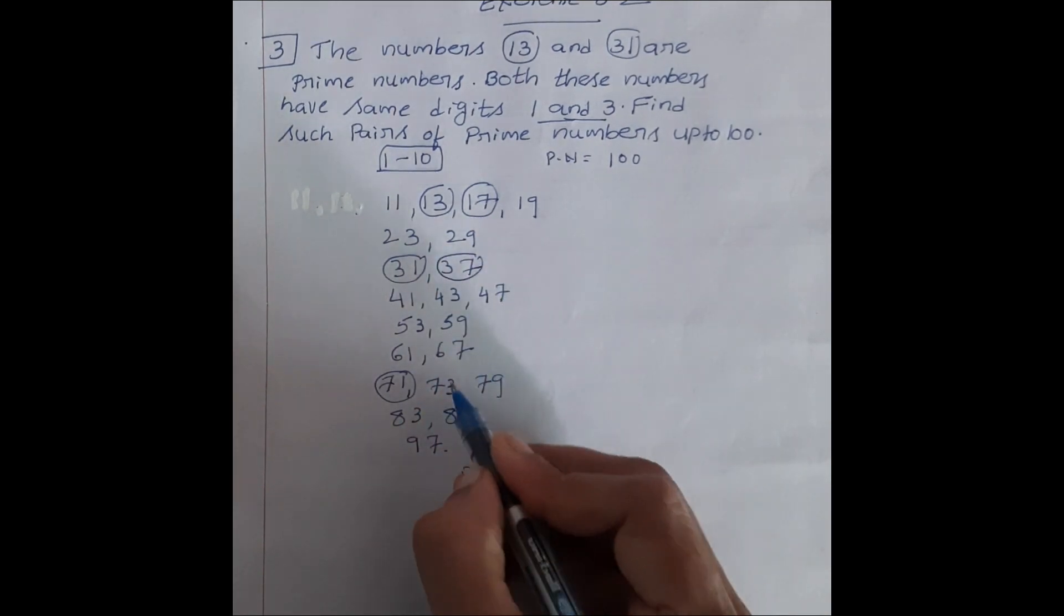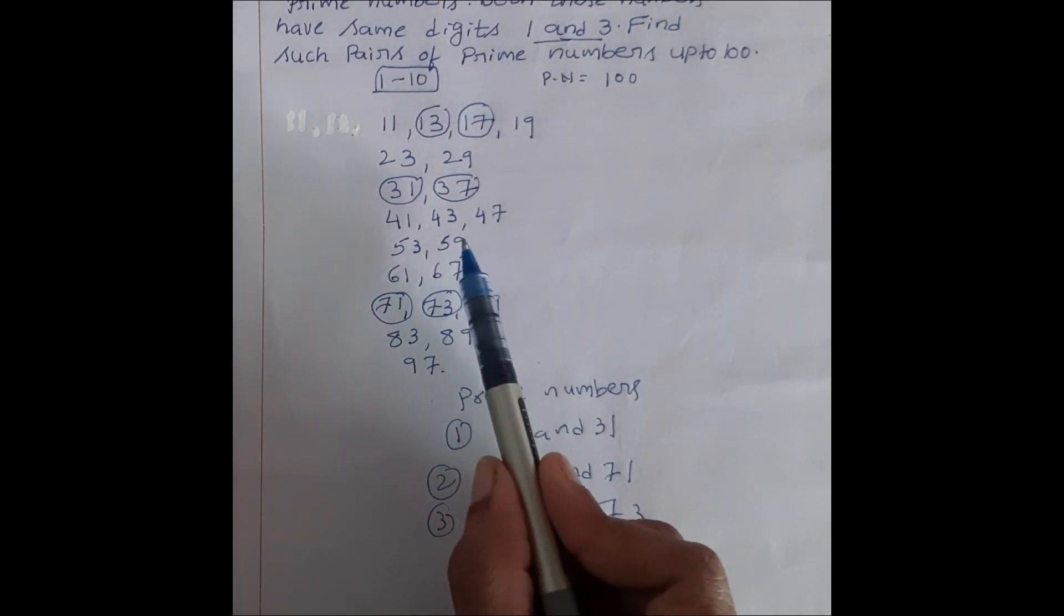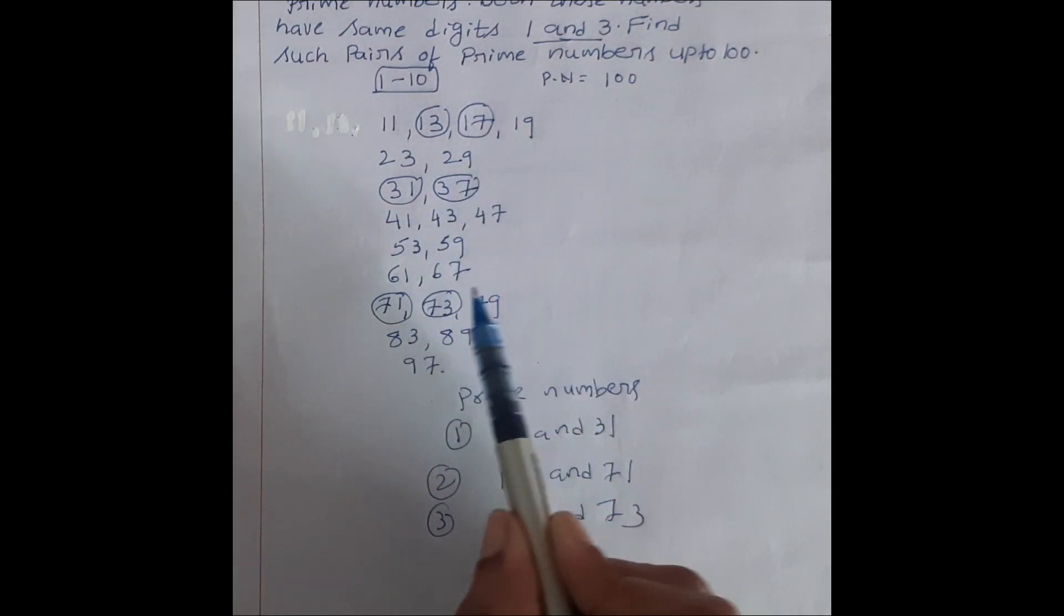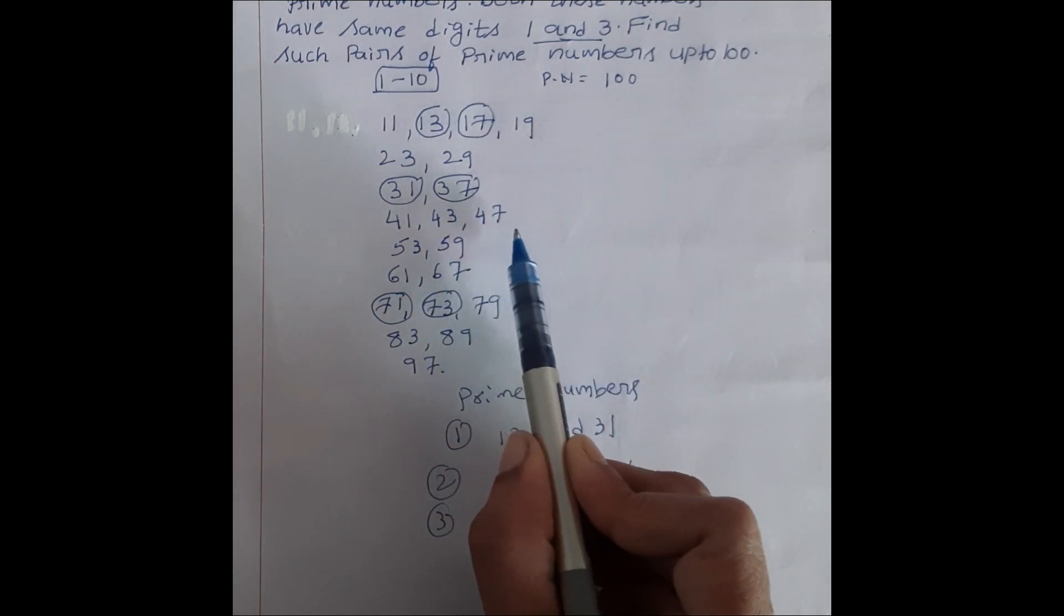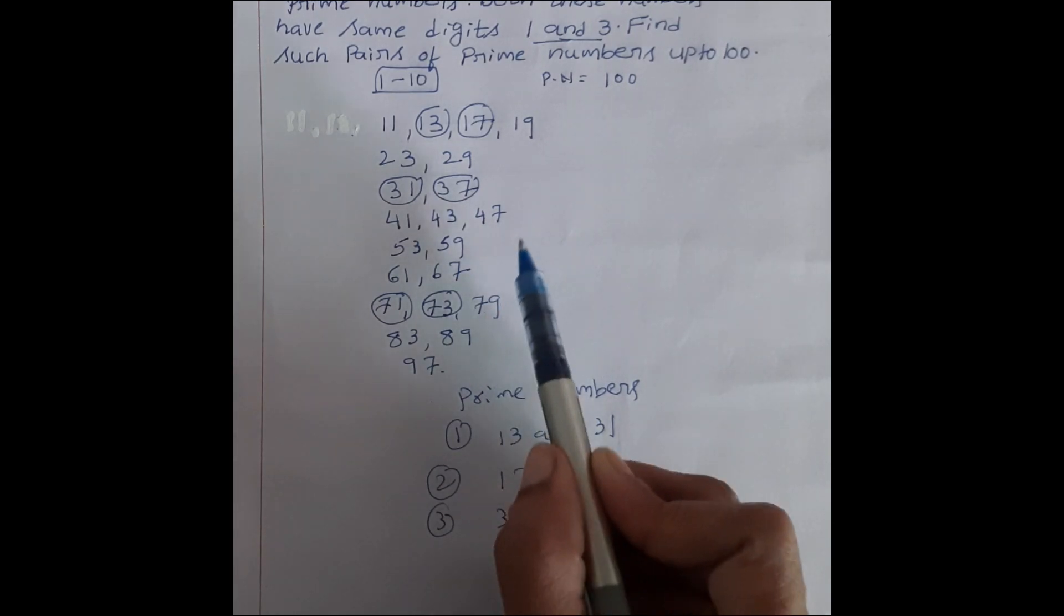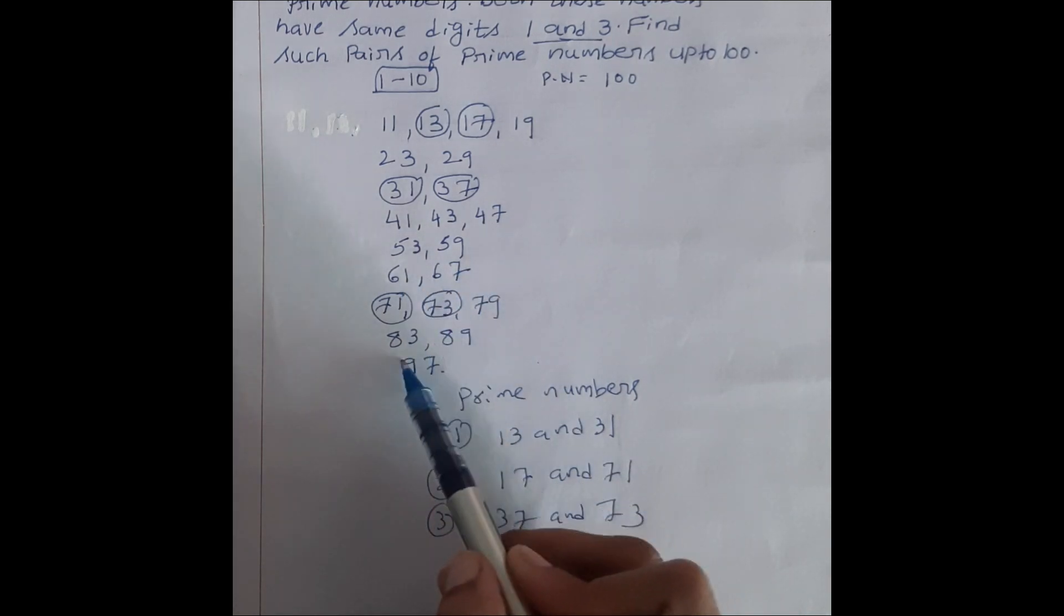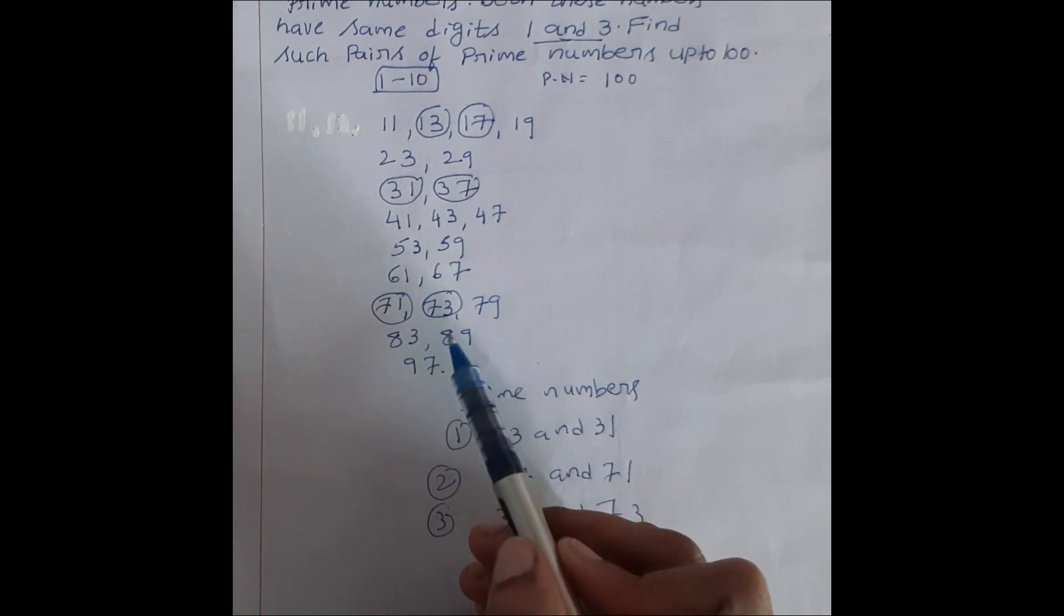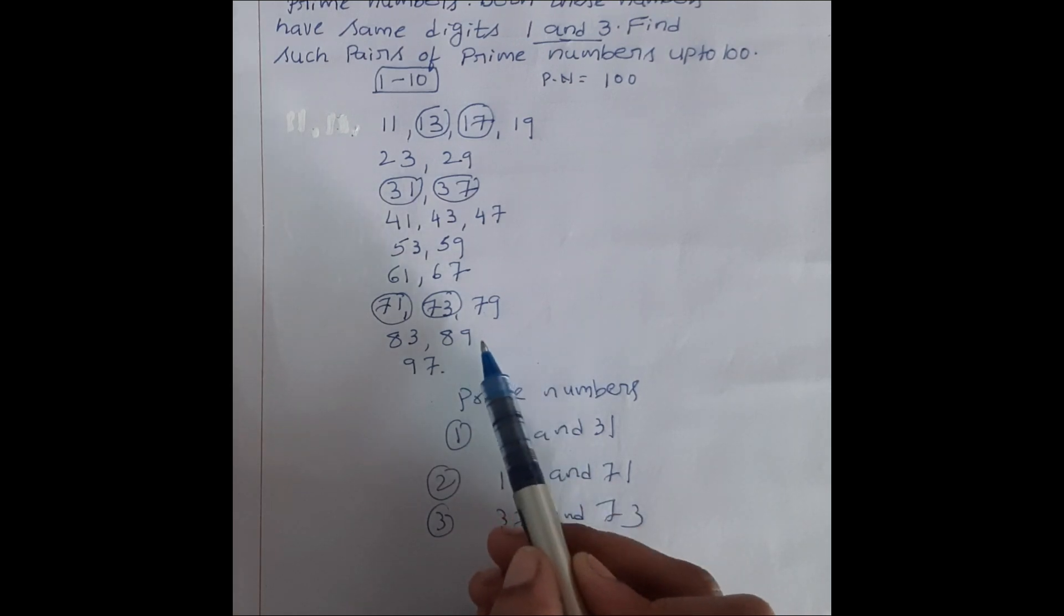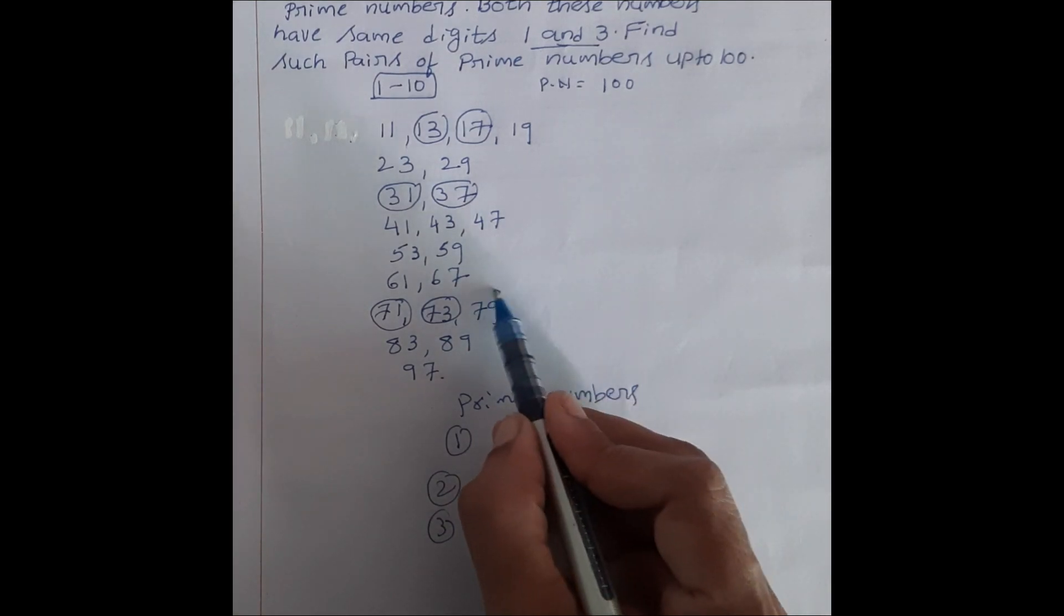37, 37, 73, yeh ek pair ho gaya. 41, means 1, 4 hai, ho nahi hai idhar. 43, 3, 4, ho bhi nahi hai. 47, 47 means 7, 4, ho bhi ho gaya hai, uska ulta bolenge toh ho bhi nahi hai. Next 71, 73 ka pair idhar mil gaya hai. 79, 97. Yeh dono ka ek pair hota hai.